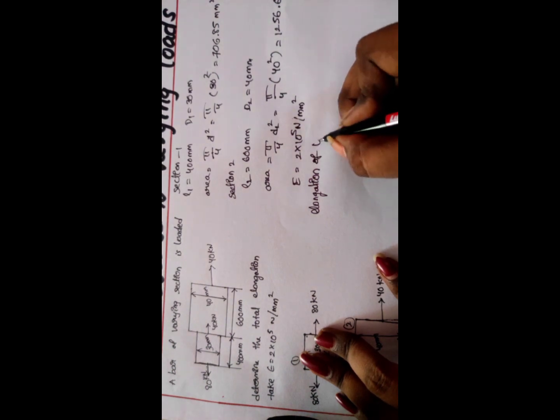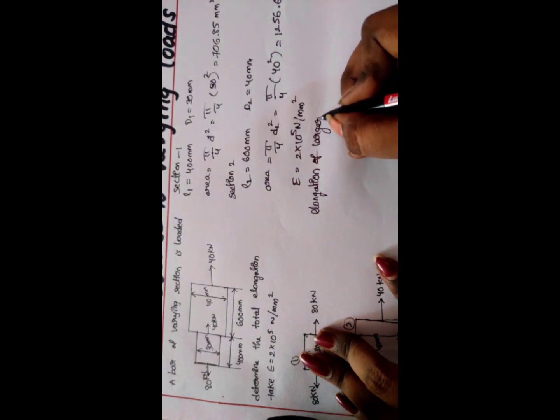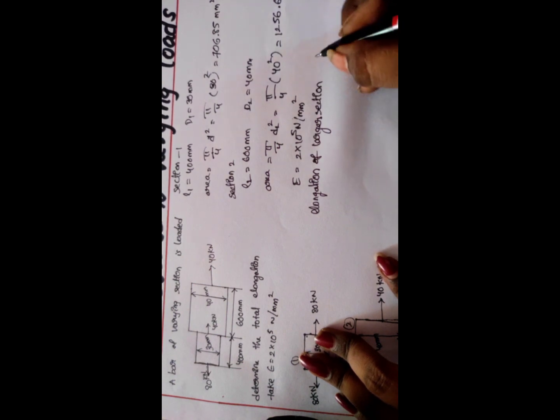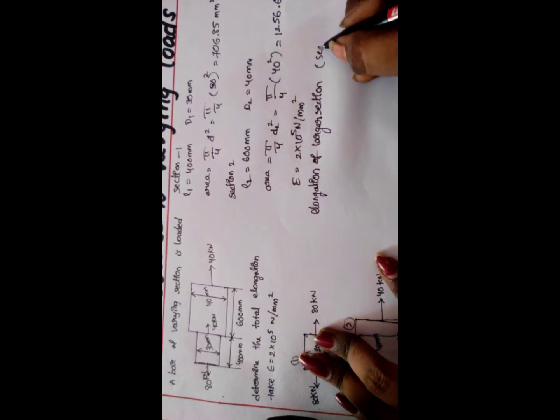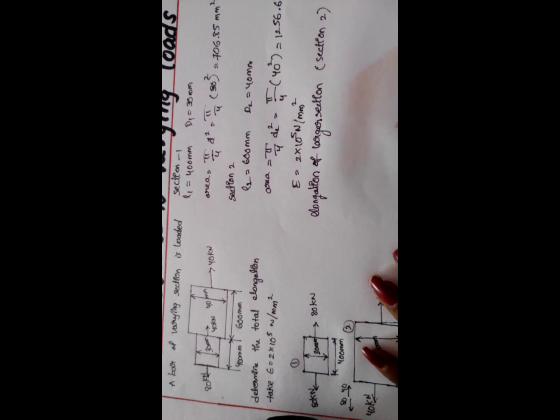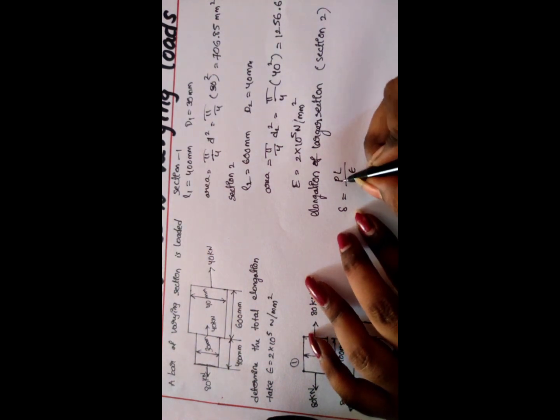Elongation at larger section, section 2. Elongation delta is equal to PL/AE, where P is load, L is length, A is area, E is Young's modulus.